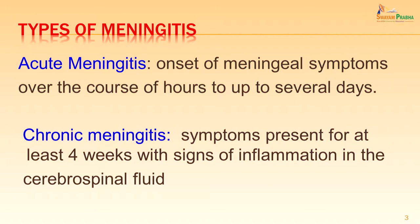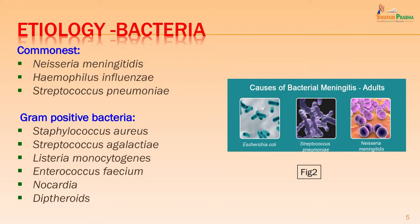There are various types of meningitis. Conventionally they are divided into acute meningitis and chronic meningitis. In acute meningitis, the onset of symptoms occurs over hours and up to several days. In chronic meningitis, it can last for 4 weeks and there are signs of inflammation in the cerebrospinal fluid. Meningitis can be caused by various microbes: bacteria, viruses, parasites and fungi. Acute bacterial meningitis is the most important syndrome being discussed today.